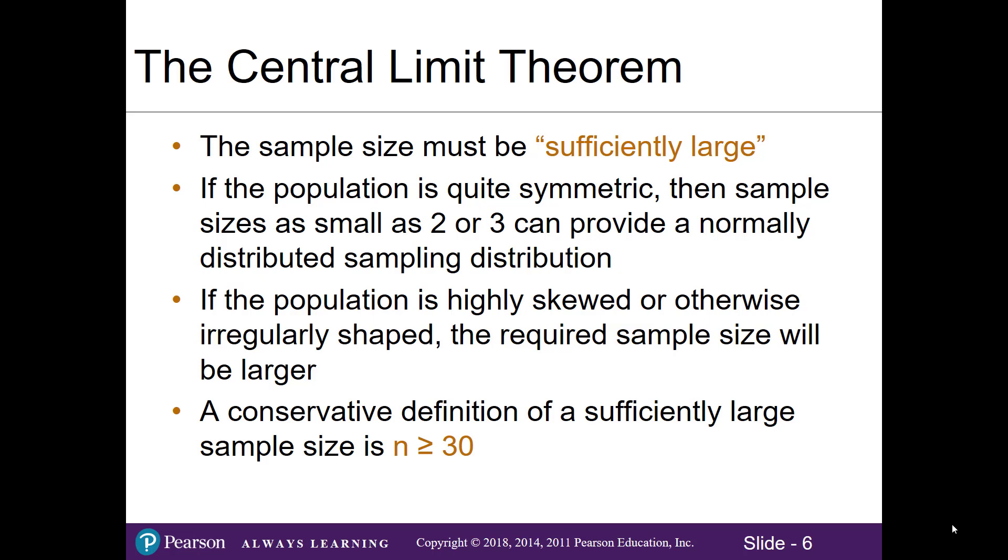Some things to note about the central limit theorem: our sample size must be sufficiently large. If the population is quite symmetric, then even small sample sizes like 2 or 3 can provide a normally distributed sampling distribution. If the population is highly skewed or irregularly shaped, such as bimodal, then the required sample size will be larger. A conservative definition of a sufficiently large sample size is n ≥ 30.